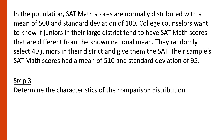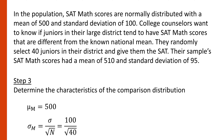Step three: determine the characteristics of the comparison distribution. This is where we compute the mean and standard deviation of the comparison distribution. Because the population was normally distributed with a mean of 500, our sampling distribution will be normally distributed and will also have a mean of 500. The formula for the standard deviation of the distribution of sample means — also known as the standard error — uses the population standard deviation with the z-test. Plugging in our population standard deviation and sample size, we get a standard error of 15.811. We'll need these values later when we compute the test statistic.